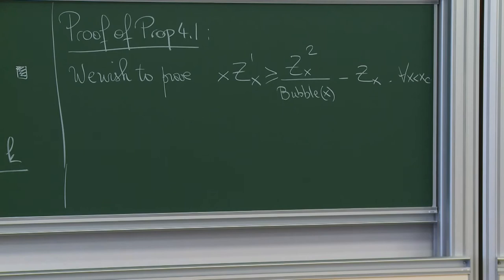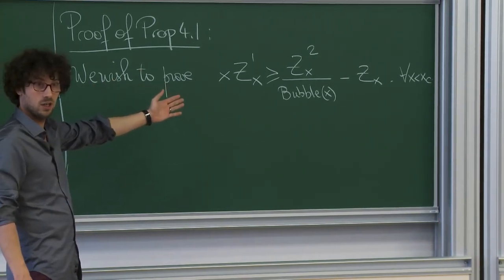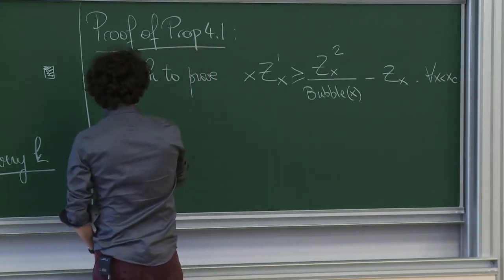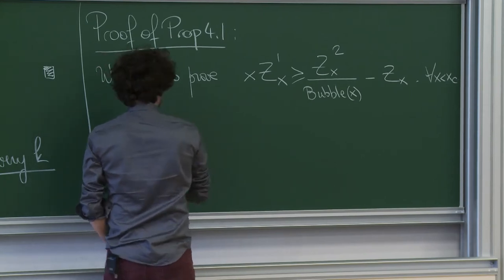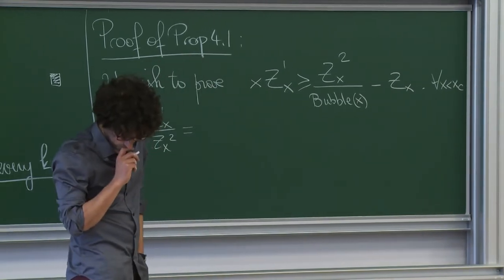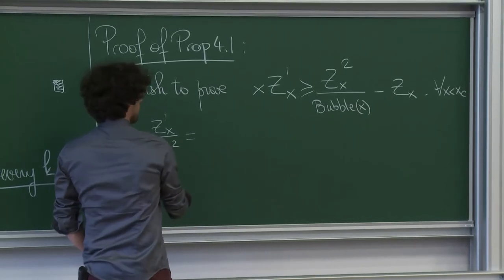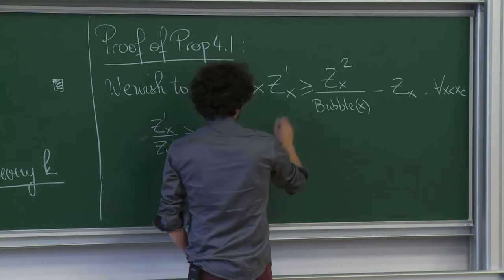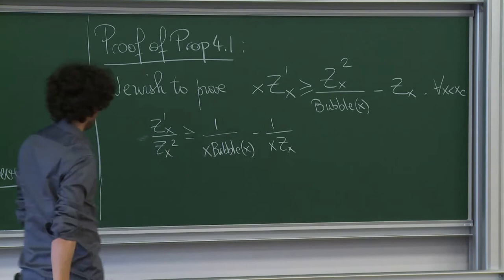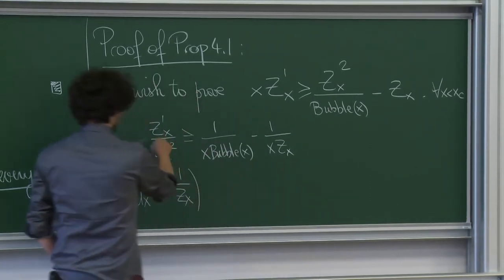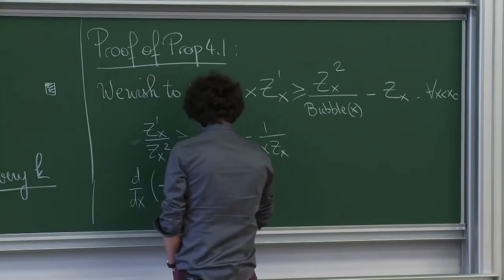Before I prove this differential inequality, let me explain how you derive the result from it. We are going to integrate this differential inequality between x and x_c. So this means minus z prime(x) over z(x) squared is larger or equal to 1 over x times bubble(x), minus 1 over x times z(x). And here I recognize the derivative of minus 1 over z(x), so that has to be larger than this quantity.